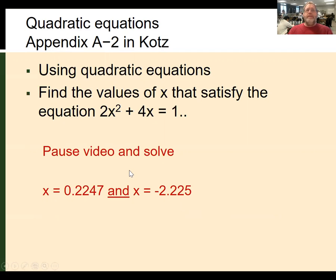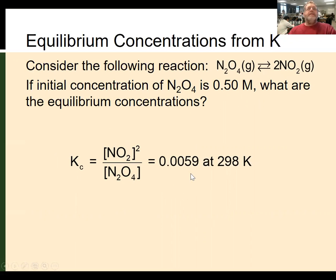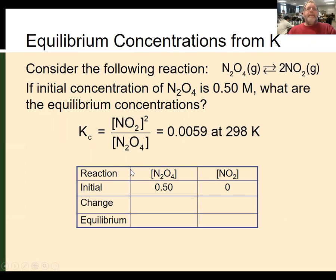Let's take a look at an example where you need to use the quadratic equation. Here I have equilibrium concentrations from K. The reaction is N2O4 gas in equilibrium with 2 NO2 gas. If we start with N2O4 at 0.50 molar — meaning there's no NO2 initially — what are the equilibrium concentrations? We'll start by writing our K equation, and at the temperature given, we have the value of K. Now we set up an ICE table. Initial values: N2O4 = 0.50 and NO2 = 0. Since NO2 is zero, it can't go down, so we call the change X or 2X.